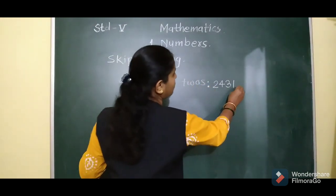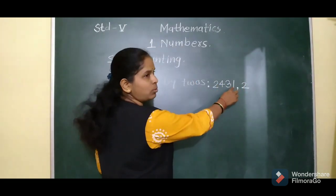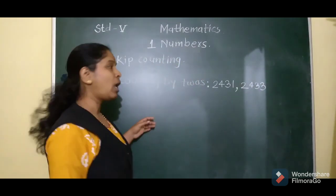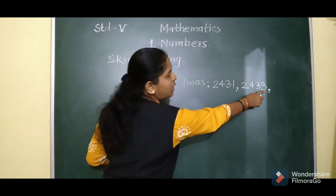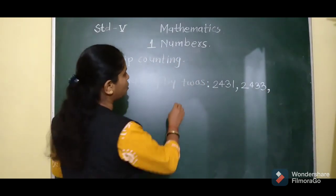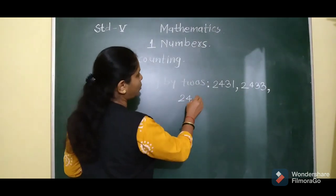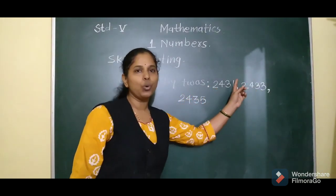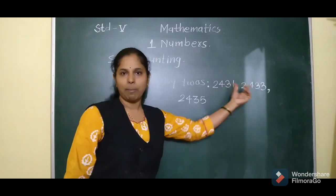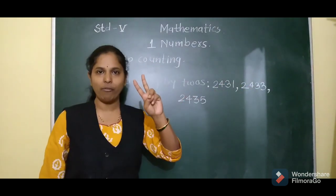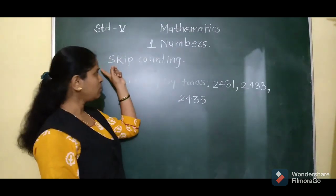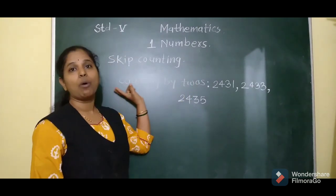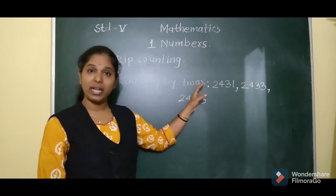Continuing counting by 2's from 2433: add 2 again, 3 plus 2 is 5, so the next number is 2435. You will see there is a gap of 2 between the numbers — between every number there is a gap of 2. Skip counting can also be counting by 10's or counting by 100's. Counting by 10's means there will be a gap of 10 between numbers.